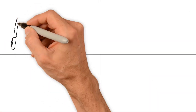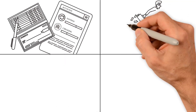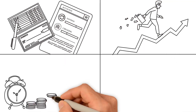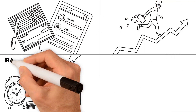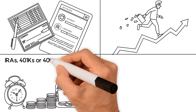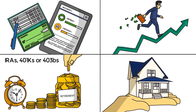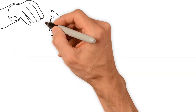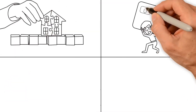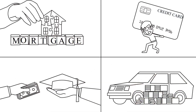Assets include bank accounts, savings and checking, stocks, retirement accounts such as IRAs, 401Ks or 403Bs, and property. Liabilities include mortgages, credit card balances, student loans, and vehicle loans.